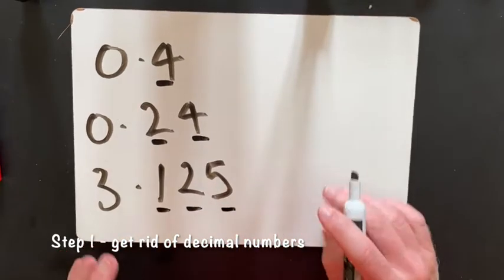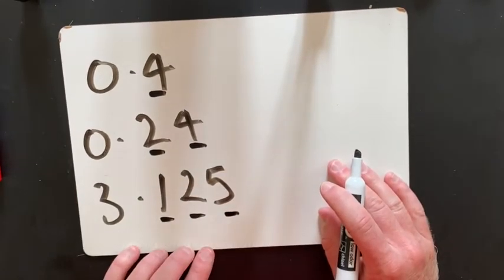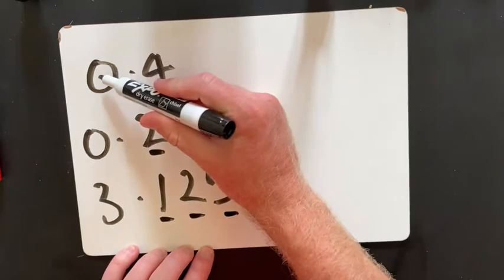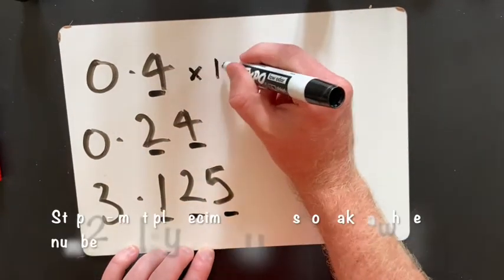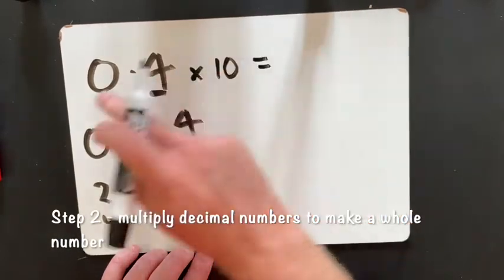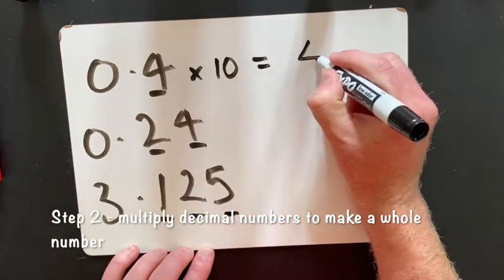See all these decimal numbers? I want to get rid of them. So because this has one decimal number, I'm going to multiply it by 10. 0.4 multiplied by 10 gives me 4.